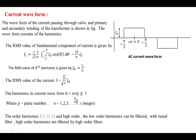The harmonics present in this current waveform are of order H = N × P ± 1, where P is the pulse number and N is an integer. For this converter, the pulse number is 6. So if N = 1, we get the 5th and 7th harmonics. If N = 2, we get the 11th and 13th harmonics. Next we get the 17th and 19th, and so on. These are lower-order harmonics. We can filter them out using tuned filters or damped filters connected to the primary winding of the transformer to eliminate these harmonics. Higher-order harmonics can be eliminated using high-order filters.